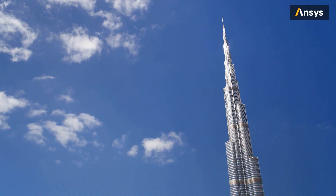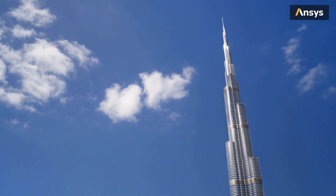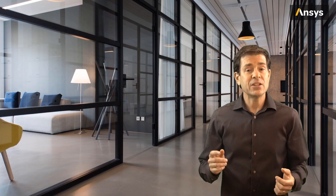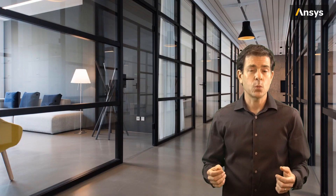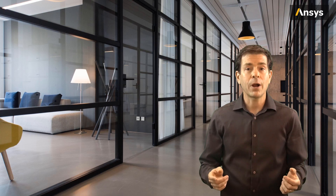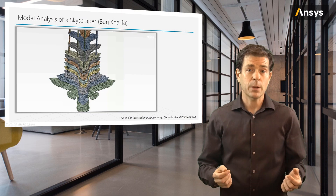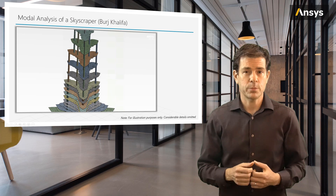While the Burj Khalifa was specifically designed aerodynamically to minimize harmonic excitation from the wind, which could be disastrous, it still responds to wind forces, which excite the skyscraper's primary natural frequencies, and it even sways approximately 2 meters at the very top. To explore the concept of modal analysis applied to a large skyscraper, a very simplified representation of the skyscraper was constructed for illustration purposes.